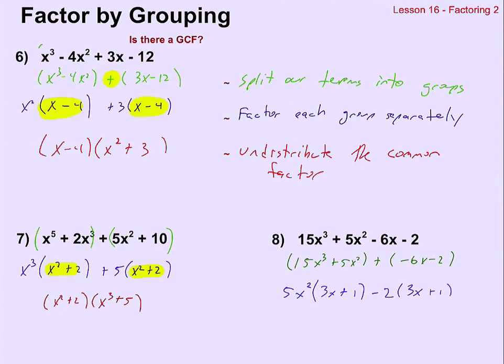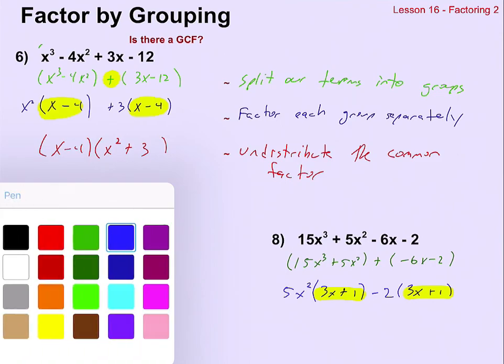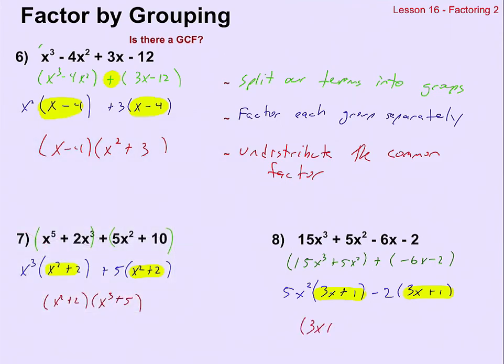And so just like we needed, the 3x plus 1 and the 3x plus 1, they are common factors. So I can undistribute the 3x plus 1 from the 5x squared and the negative 2, and that's factored.